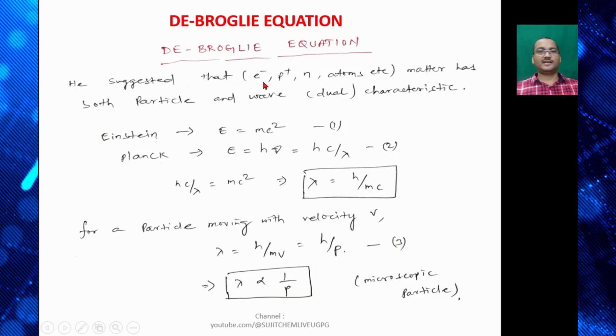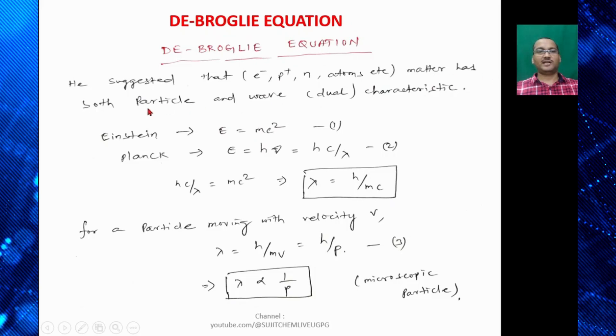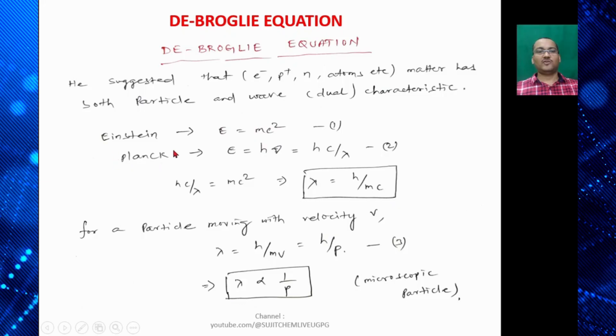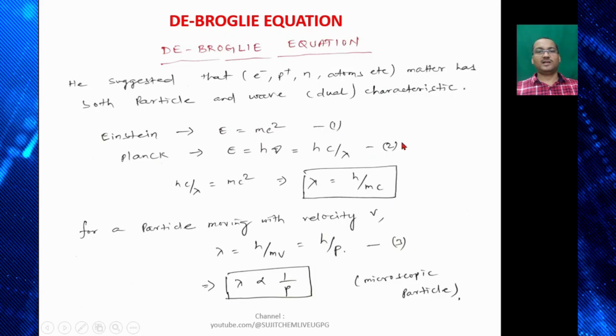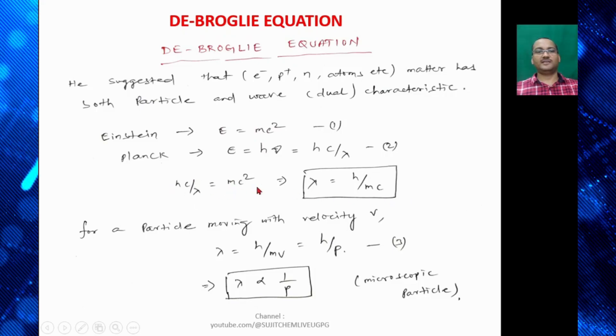De Broglie suggested that electrons, protons, neutrons and atoms etc., matter has both particle and wave or dual characteristics. According to Einstein, E = mc². And according to Planck, E = hν. So now combining equation 1 and 2, hν = hc/λ. So that means mc² = hc/λ, or we can now cancel c. So λ becomes h upon mc.